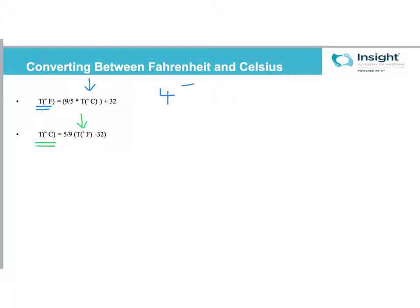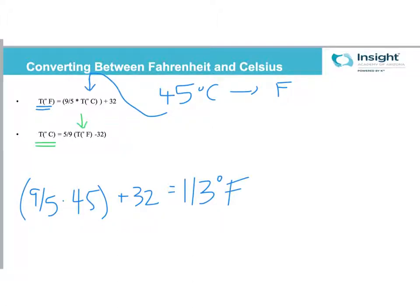So let's do a couple of these. Let's convert 45 degrees Celsius to Fahrenheit. So that means I'm going to plug 45 in here. I'm going to have 9/5 times 45 plus 32. The calculator comes in handy. I got 113 degrees Fahrenheit, which makes sense because if body temperature is 98.6, which is equivalent to 37 degrees Celsius, then 45 should be higher than 98.6.